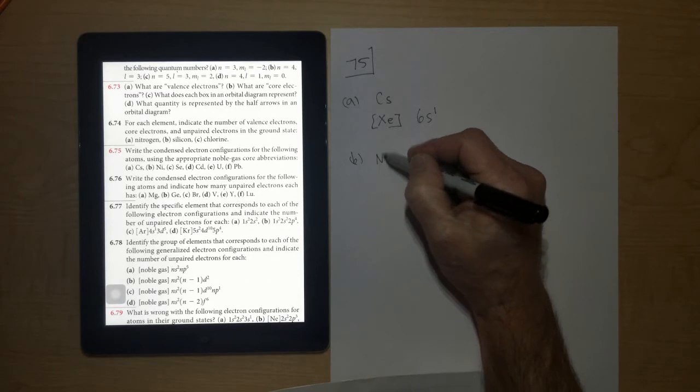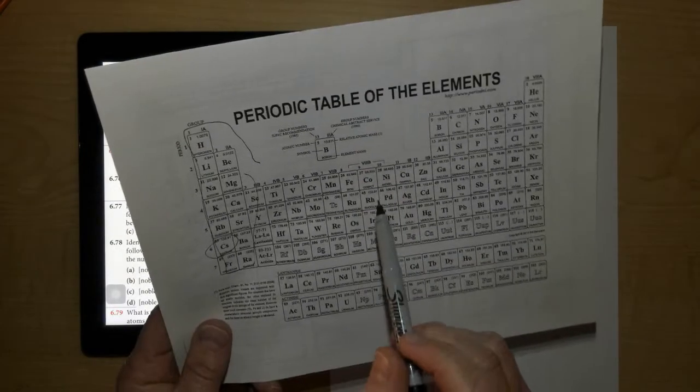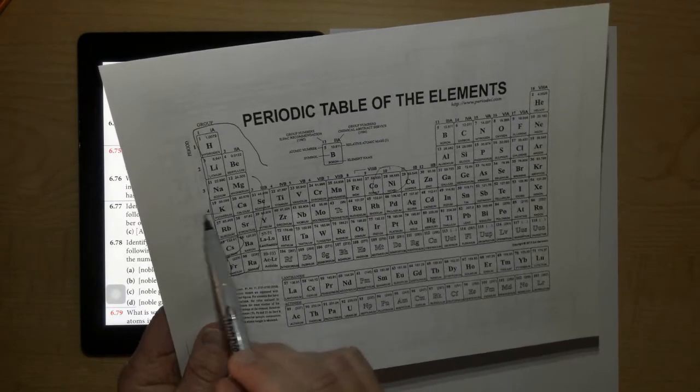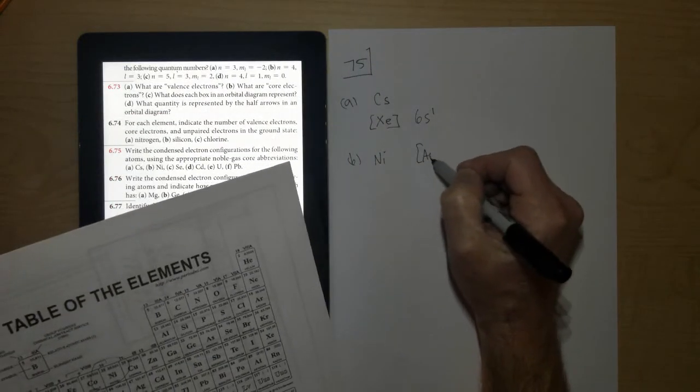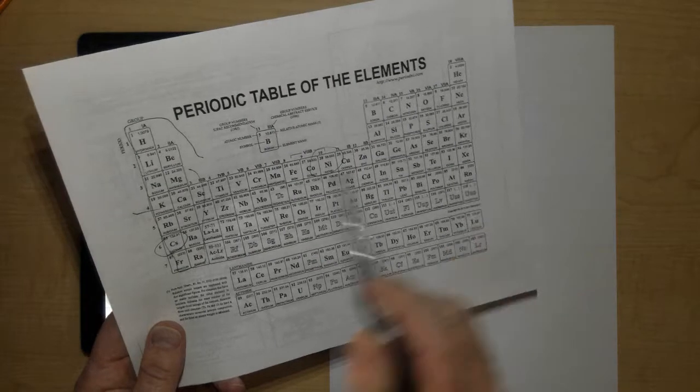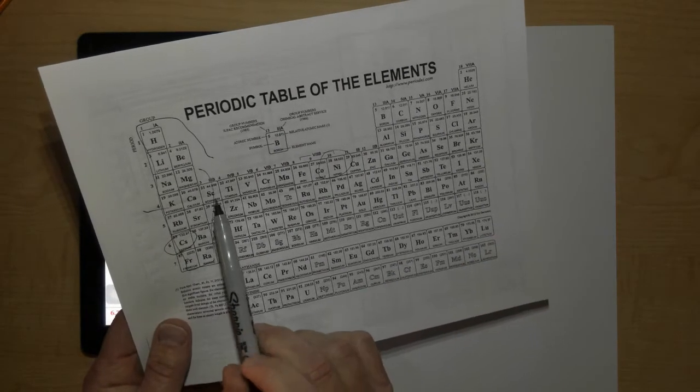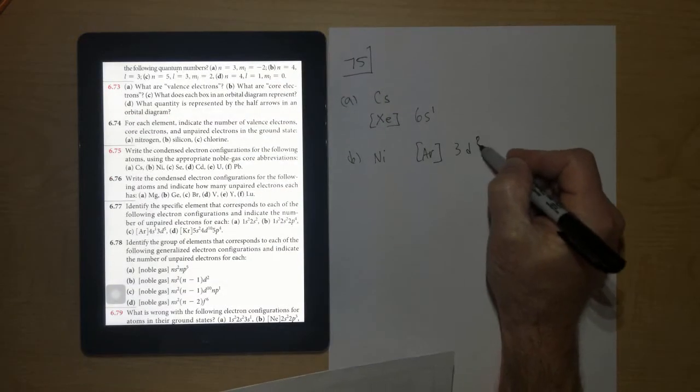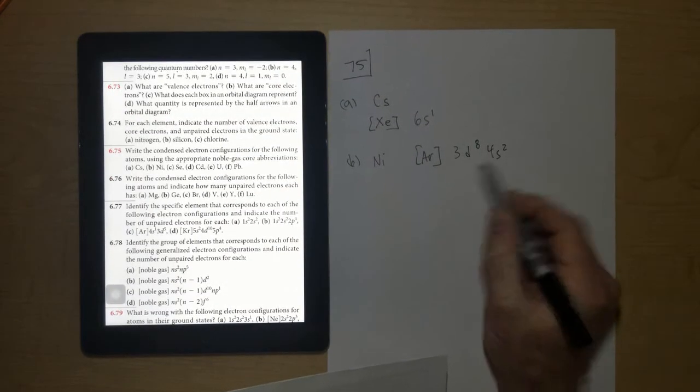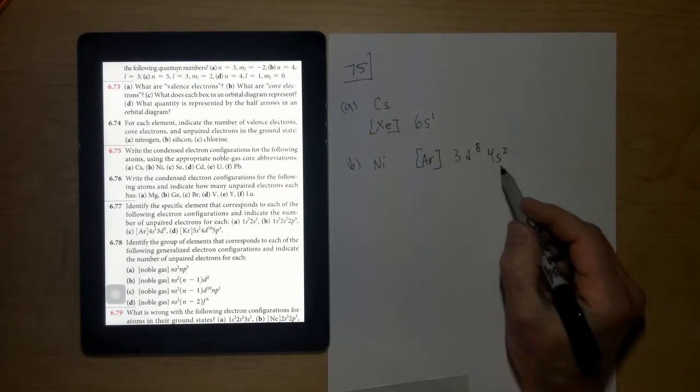The next one is nickel. Nickel is right here on the periodic table. You'd look backwards to the nearest noble gas. It would be argon. So you'd put argon into brackets. And then you'd go 4S2, 3D, 1, 2, 3, 4, 5, 6, 7, 8. So 3D8 and then 4S2. You could write it in either order, and it would be absolutely fine to have those reversed.